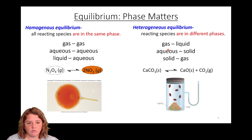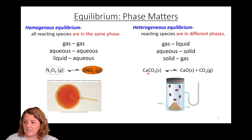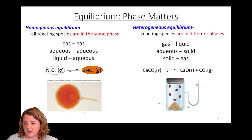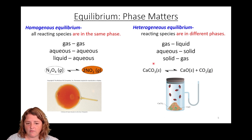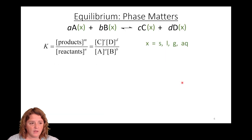Heterogeneous equilibrium involves two different phases. For example, solid calcium carbonate decomposing into calcium oxide and carbon dioxide gas — because the gas is a different phase than the solids, this would be an example of heterogeneous equilibrium.